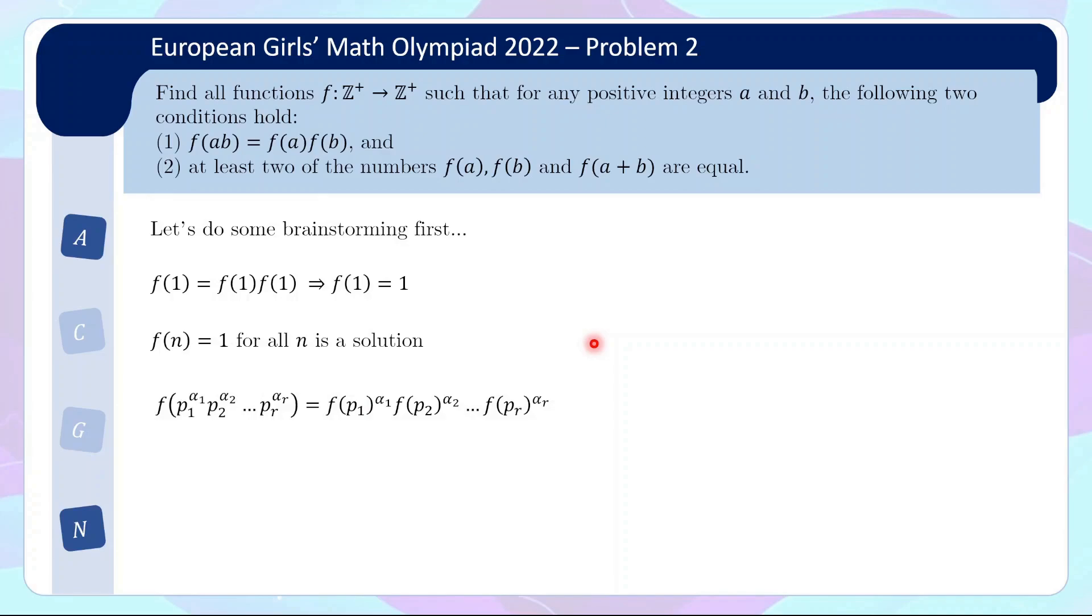So the natural question is, can we then pick f(p) arbitrarily for all primes? Surely the condition number 2 must put some more constraint on whether we can just anyhow pick the value of f(p) for all primes. So to investigate this, again, maybe it's natural to try small cases. So we'll actually do a very important example which will inspire the full solution later on. So take note of this important example.